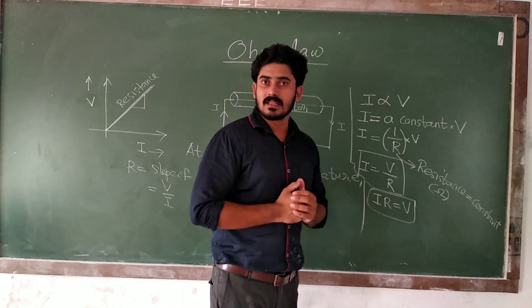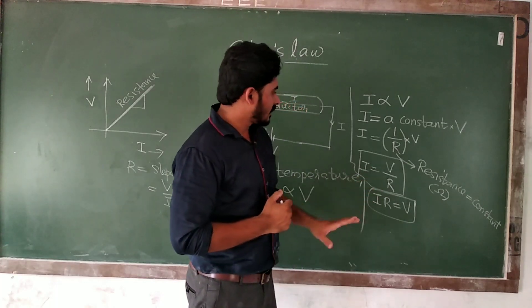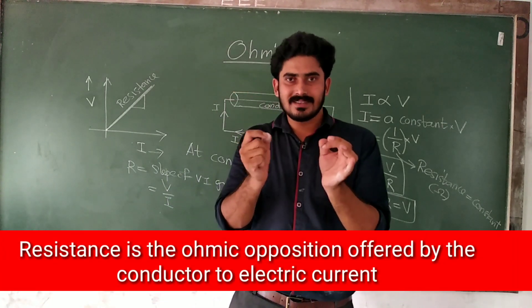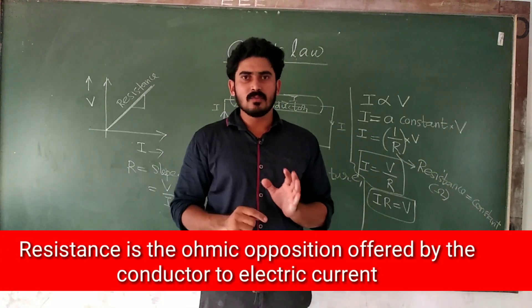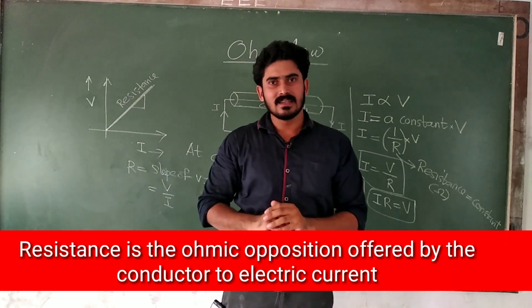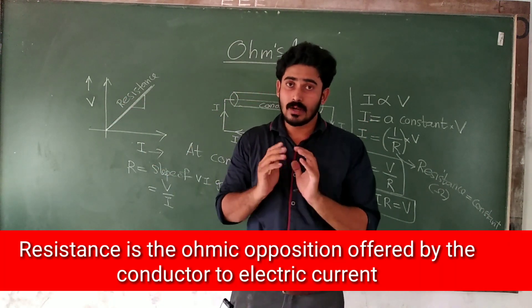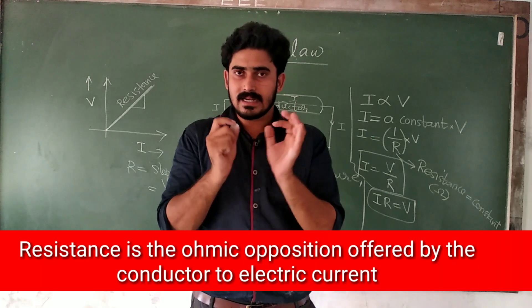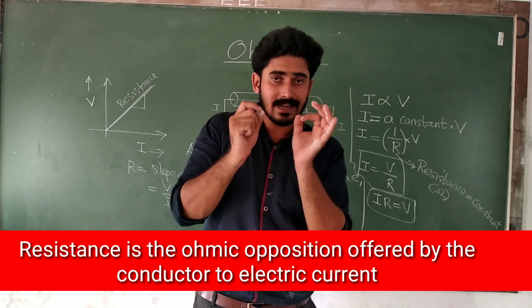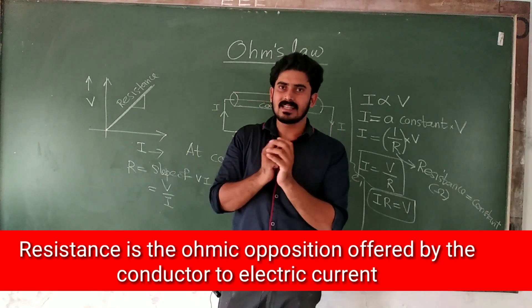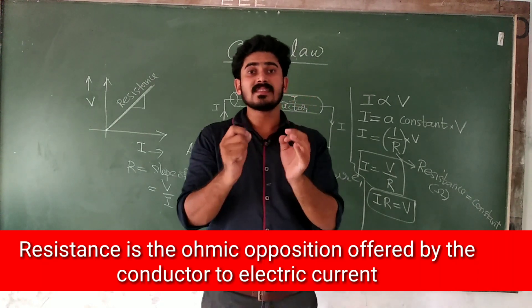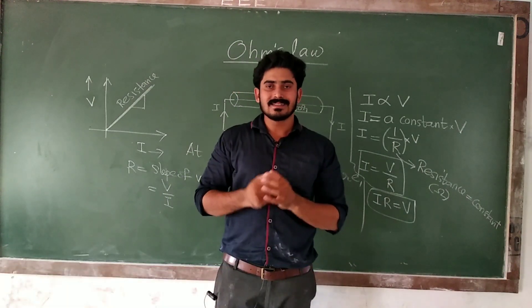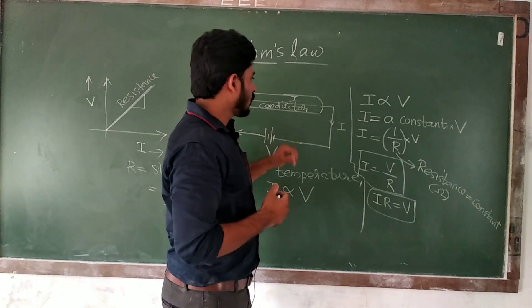The resistance R is a term we introduce. Resistance is a concept. It is the opposition offered by the conductor to the flow of electric current. Resistance is the opposition offered by the conductor to the flow of electric current, and its unit is Ohm.